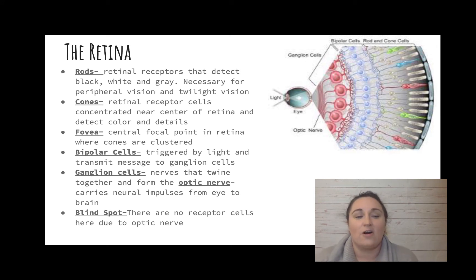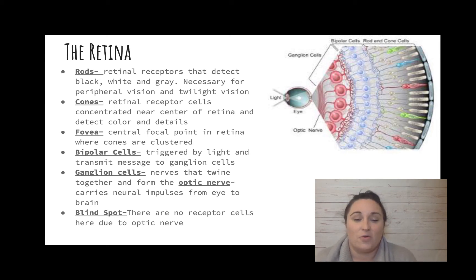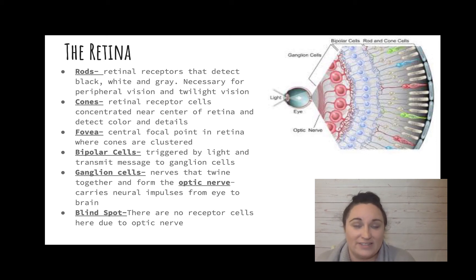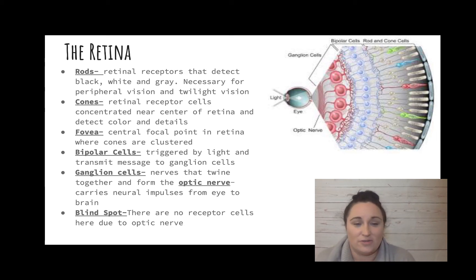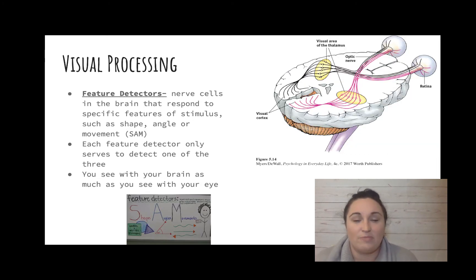All of those ganglion cell wires are called the optic nerve, which takes the neural message to the brain. Because all those wires bundle together — like that hole in the desk where there's no desk — there are also no receptor cells right at that spot. That's our blind spot, sometimes referred to as the optic disc.